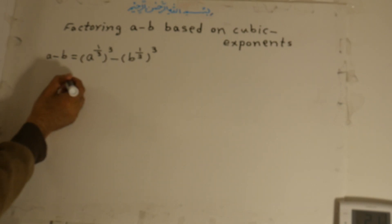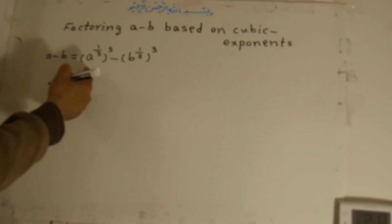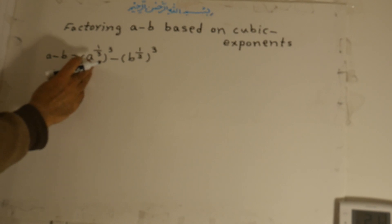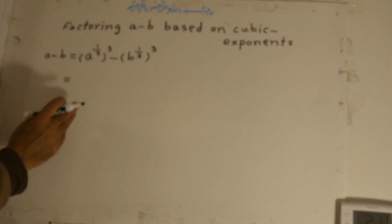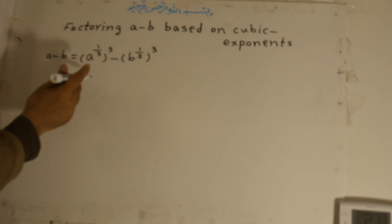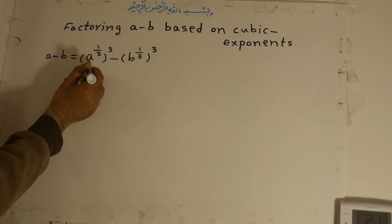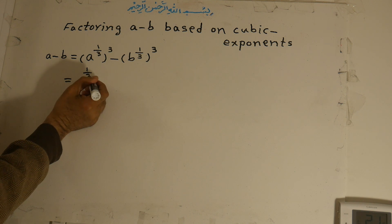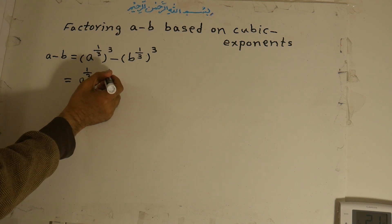According to lesson 122e, this kind of factorization gives: the first factor is a minus b — that is, a to the power of one-third minus b to the power of one-third. The second factor uses: the square of the first, plus the first times the second, plus the square of the last.